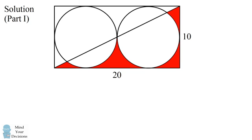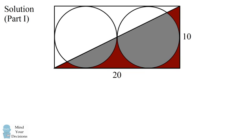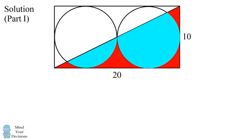We'll get started on the first problem. We'll solve for the area of the red regions by subtraction. We'll take the area of this triangle and then subtract out different portions of the circles. So we can set up a formula: the area of the red regions equals the area of this right triangle minus the area of each of these pieces from the different circles.